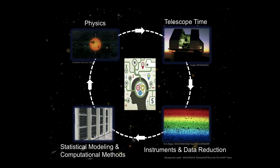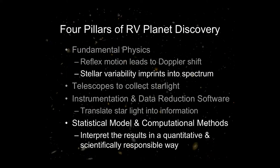I call these the four pillars of exoplanet discovery: you have to have fundamental physics — knowing about the reflex motion of stars, the Doppler shift, and how stellar variability can imprint itself on the spectrum. You need telescope time — the amount of information we need to extract is increasing, and whereas in the old days we might have been happy with a few dozen observations, increasingly we're going to use over a hundred observations per star to characterize each star's individual variability patterns. Of course we need the instrumentation, and then at the very end we interpret that model in a scientifically responsible way, thanks to advances in statistical and computing methods.